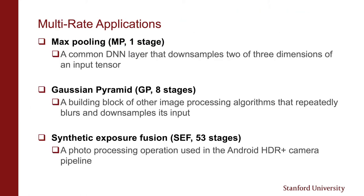For multi-rate applications, we evaluate three apps: max pooling (MP), a one-stage common DNN layer that down-samples two or three dimensions of an input tensor; Gaussian pyramid (GP), an eight-stage building block that repeatedly blurs and down-samples an input image; and synthetic exposure fusion (SEF), a 53-stage photo processing operation used in the Android HDR+ camera pipeline that builds two Gaussian pyramids, two Laplacian pyramids, does point-wise math, and reconstructs the result. To our knowledge, SEF is the largest application ever automatically compiled from an architecture-agnostic DSL for image processing to an FPGA.